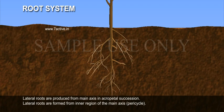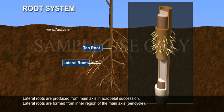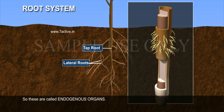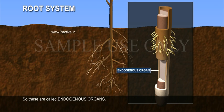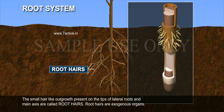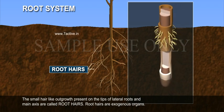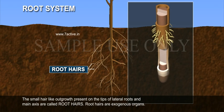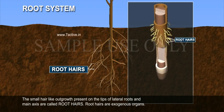Lateral roots are produced from the main axis in acropetal succession. Lateral roots are formed from the inner region of the main axis pericycle. So these are called endogenous organs. The small hair-like outgrowths present on the tips of lateral roots and main axis are called root hairs. Root hairs are exogenous organs.